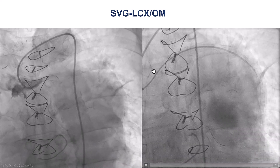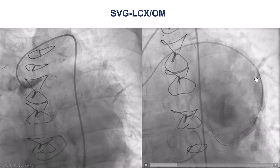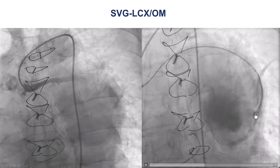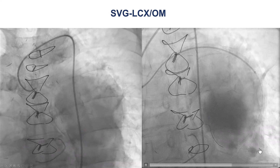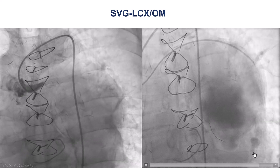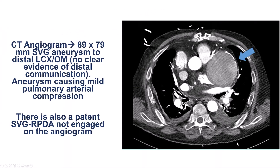We can see here, after inserting a guide extension, that the aneurysm is really huge, and there's some flow going down, likely to the obtuse marginal branch. To further clarify the anatomy, we performed a chest CT that demonstrated that the SVG aneurysm was truly giant.